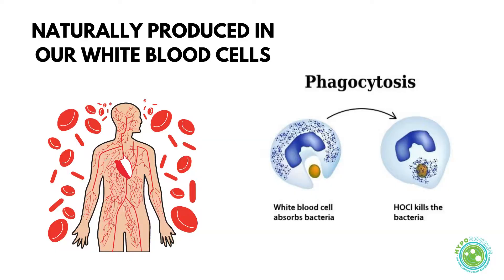If this sounds familiar, it's because our own human bodies produce hypochlorous acid in our white blood cells to fight off invasive pathogens. Hypochlorous acid invades the pathogen's cell walls and disarms it through a process called phagocytosis — think of it as the undercover sting agent of disinfectants.